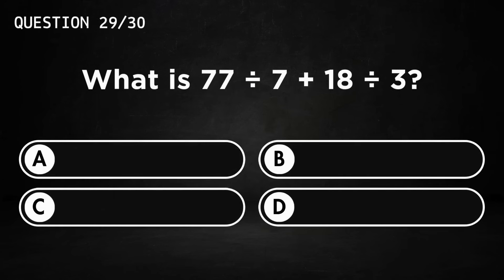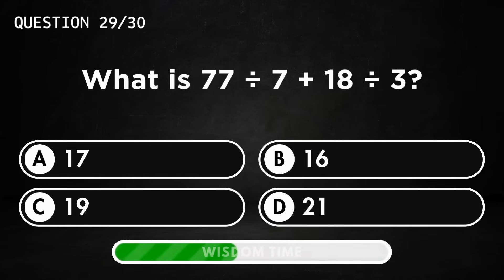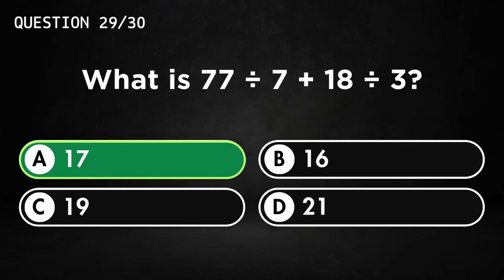What is 75 divided by 7 plus 18 divided by 3? Answer A, 17.